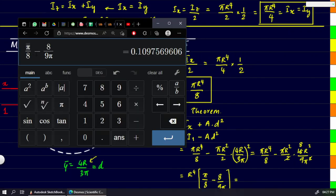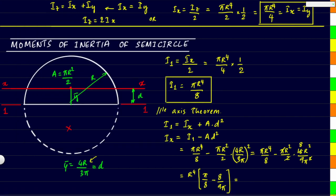And if we use a calculator to find this value that's almost equal to 0.11, so 0.11 times r⁴ is the value of Ix for a semicircle.